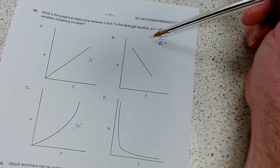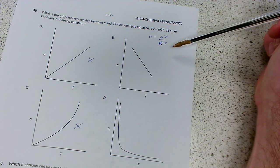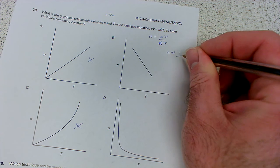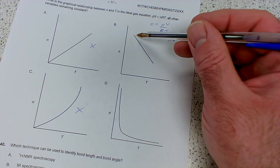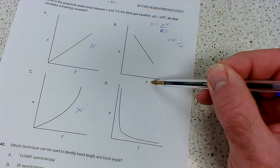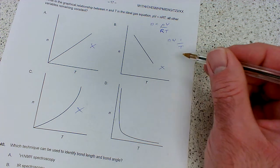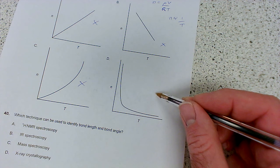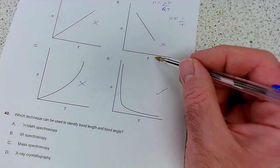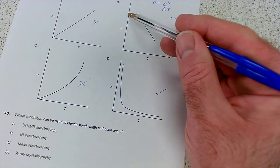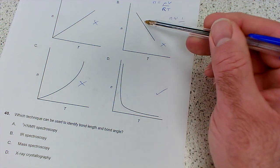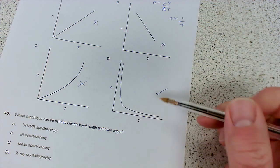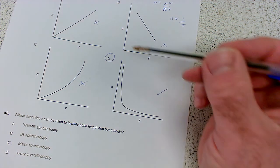Now we're down to 50-50. Both show n decreasing as temperature increases, which is correct. Notice n is proportional to 1/T. I'd expect a straight line if they plotted n against 1/T, but this is not 1/T - it's just T. Because they've plotted n against the reciprocal of 1/T, which is T, I'm going with the curve. I think D is the answer.